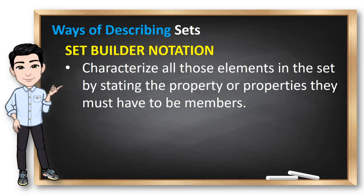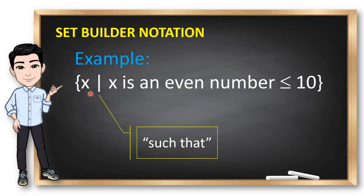Another way to describe a set is to use set-builder notation. We characterize all those elements in the set by stating the property or properties they must have to be members. The set x such that x is an even number less than or equal to 10 is written in set-builder notation. Because instead of listing all the elements, we use the properties of all the possible elements like 8, 6, 4, and 2.